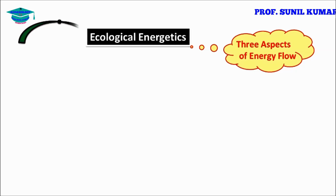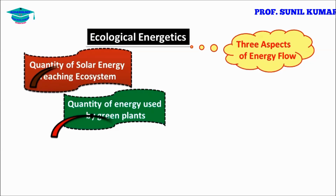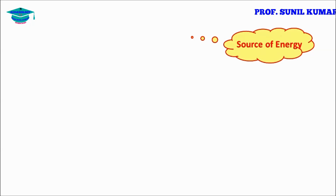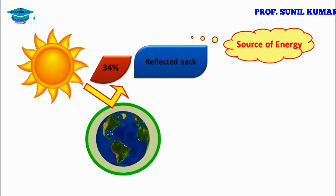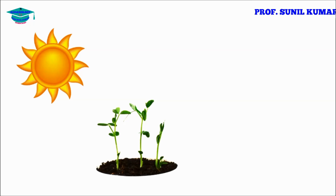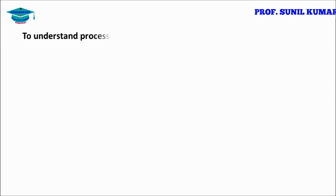When we talk about ecological energetics, there are three aspects of energy flow: first, the quantity of solar energy reaching the ecosystem; second, the quantity of energy used by green plants; and third, the pathway of energy flow. Of the sunlight, 34% is reflected back, 10% is trapped in the atmosphere, and the remaining 56% reaches the earth's surface. Of the sunlight reaching plants, only 0.02% is used for photosynthesis.